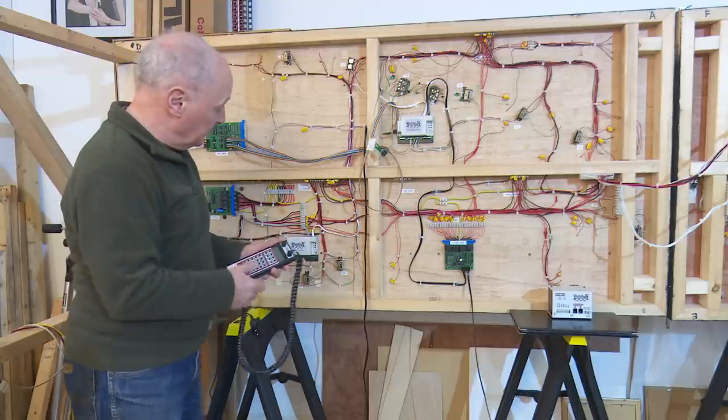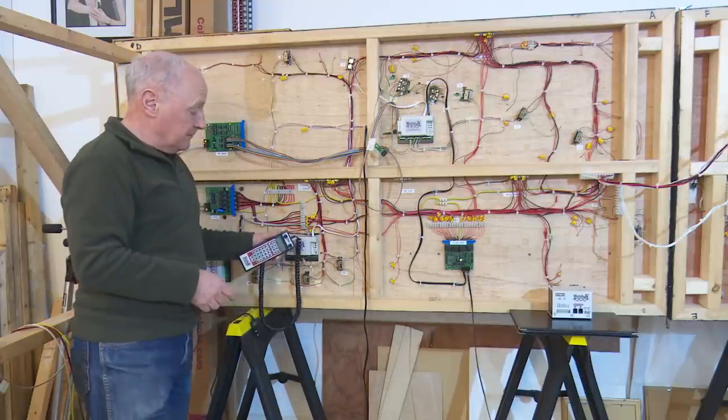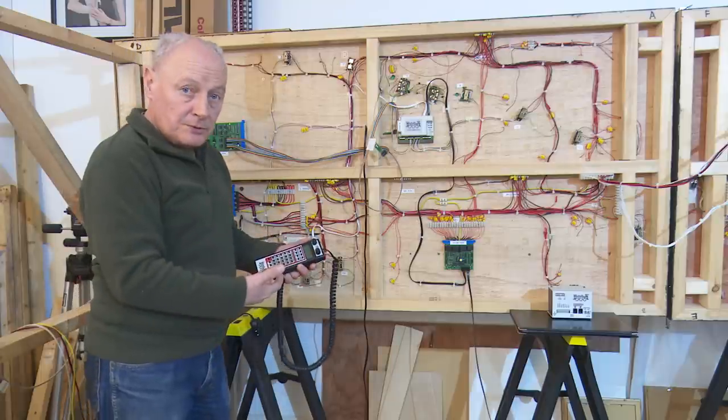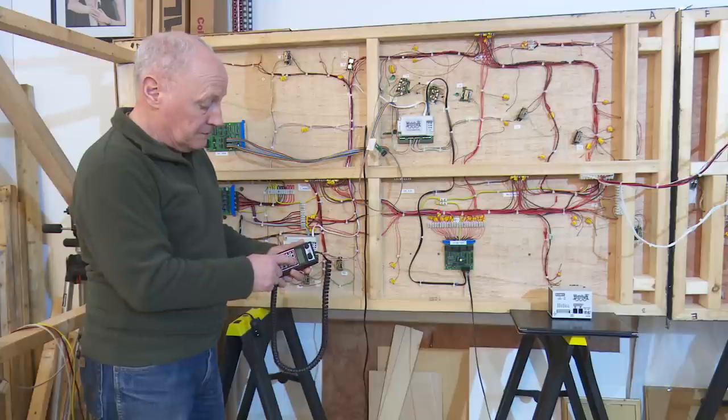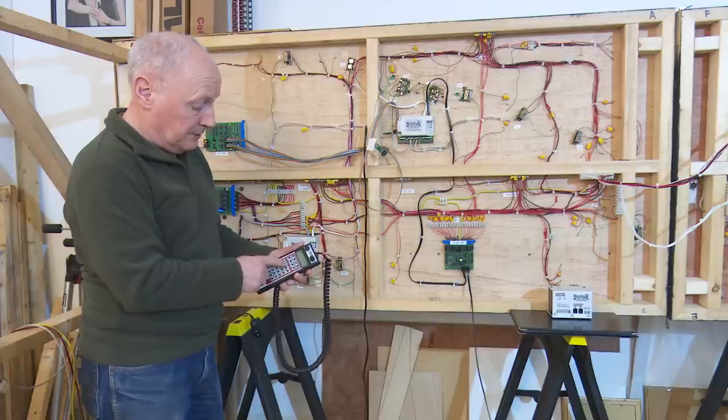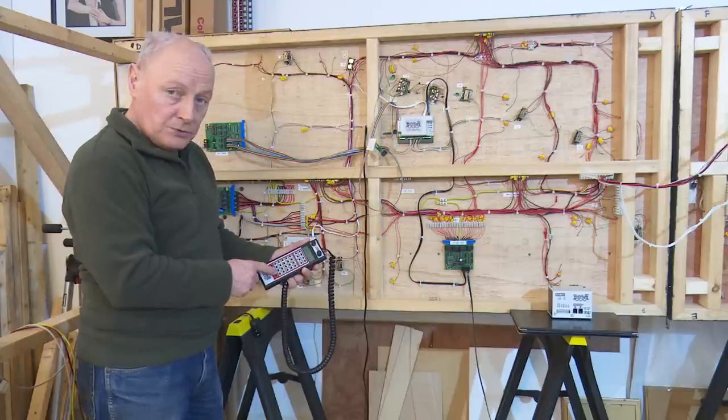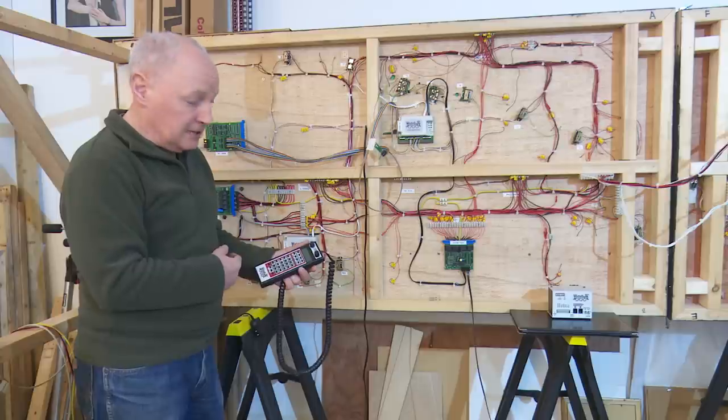When it comes to points because you've opted to use the DS64 you can then control the points from the handset which is quite a simple evolution. You just press switch and say it's switch or point number twelve, press one and two and then throw or close and the point naturally changes.